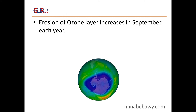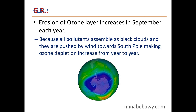Give reason: erosion of the ozone layer increases in September each year. This is because all pollutants assemble as black clouds and are pushed by wind towards the South Pole, making ozone depletion increase from year to year.